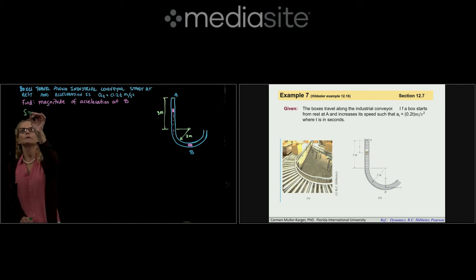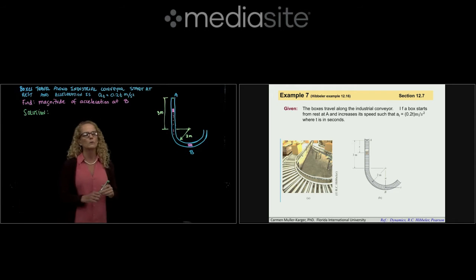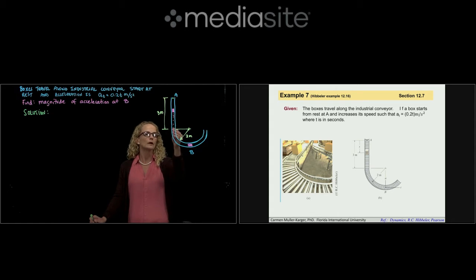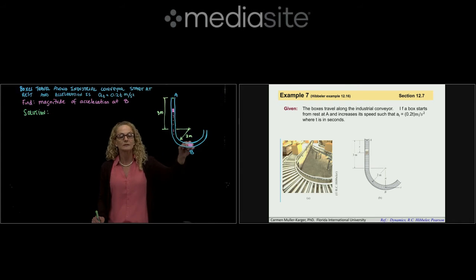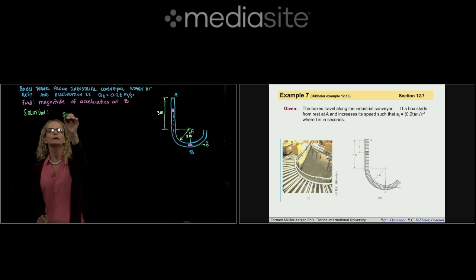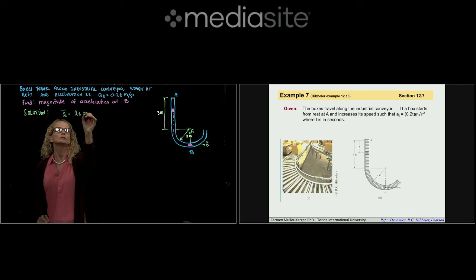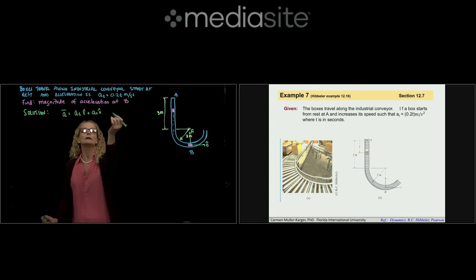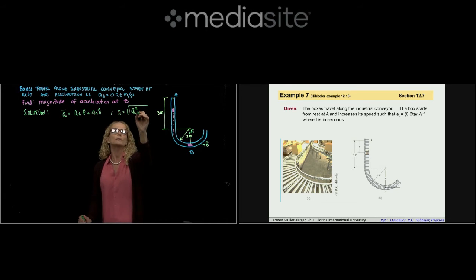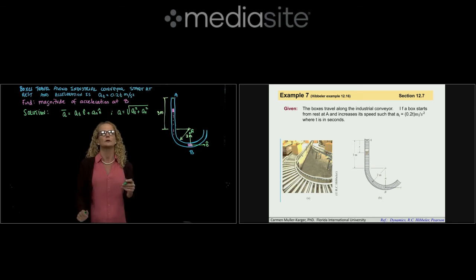What is the solution to this problem? First, we select the appropriate coordinate system. Since we have a circular path at the position of interest, we use normal-tangential components. There are two directions: the tangential direction and the normal direction. The acceleration vector has a tangential component and a normal component, and the magnitude is the square root of the tangential acceleration squared plus the normal acceleration squared.